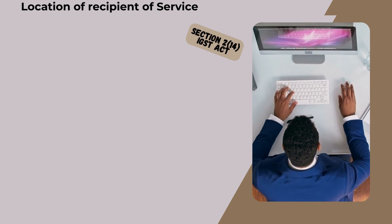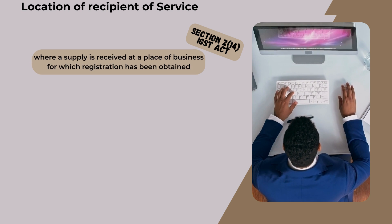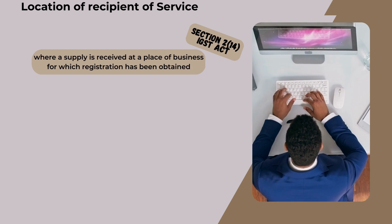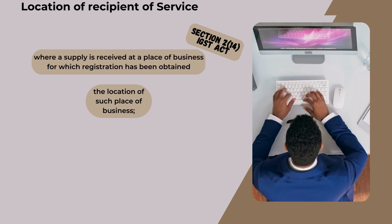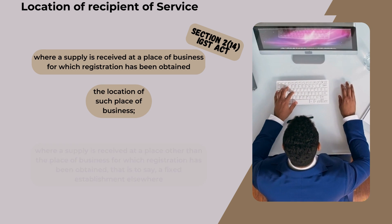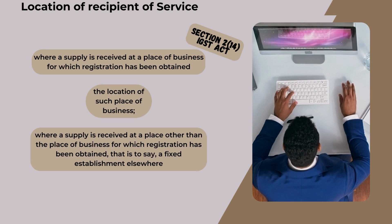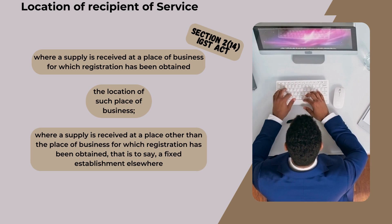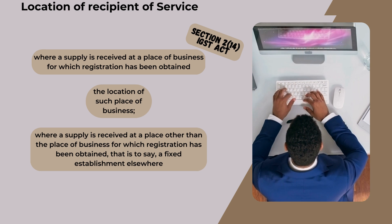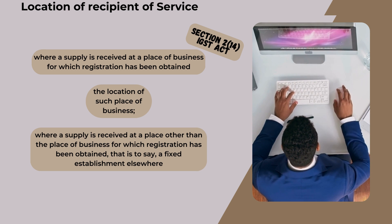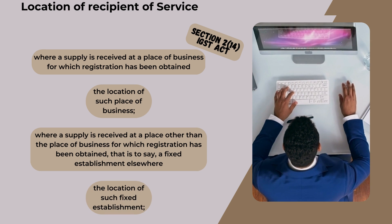Location of Recipient of Service: Where a supply is received at a place of business for which registration has been obtained, the location of such place of business applies. Where a supply is received at a place other than the registered place of business — that is to say, a fixed establishment elsewhere — the location of such fixed establishment applies.